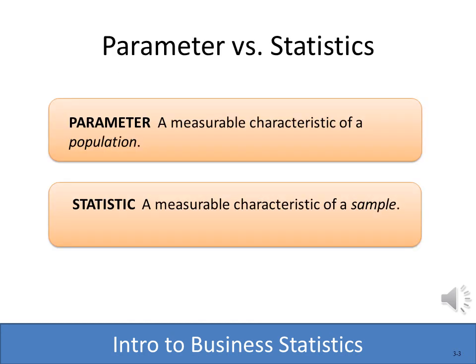When we're working with statistical information or numeric values computed from populations and samples, we actually call them two different things. A parameter would be a measurable characteristic of the entire population — so if we're talking about an average of a population, we would refer to that as a parameter. On the other hand, if we are measuring something about a sample, we would refer to that as a statistic. The goal of statistics is to help us to infer things — inferential statistics — which is being able to make decisions or inferences or guesses about a population based on a sample.